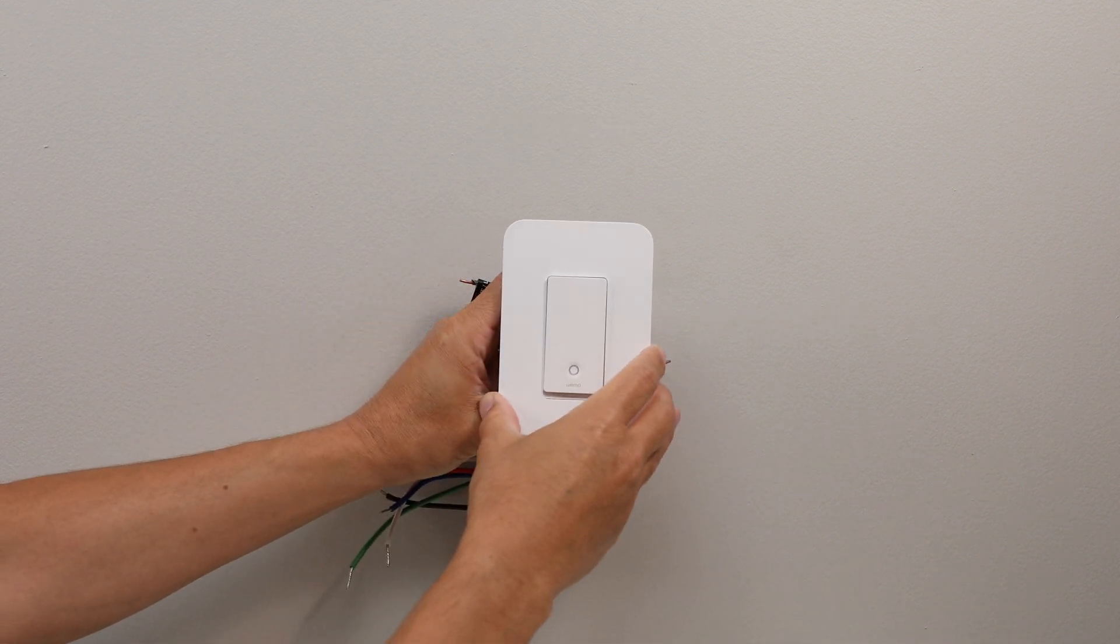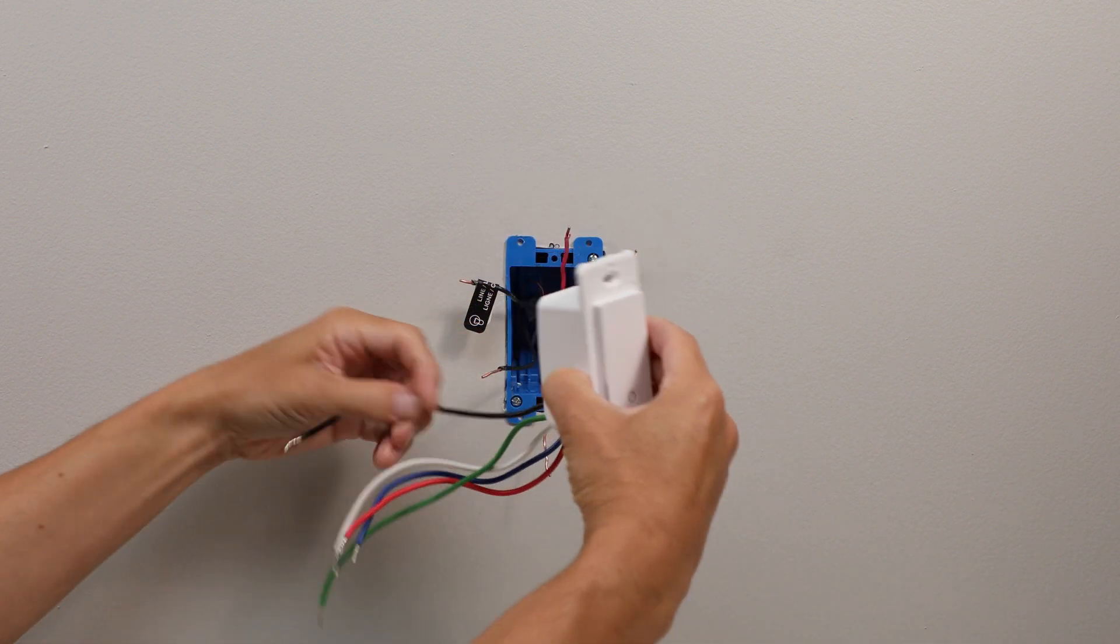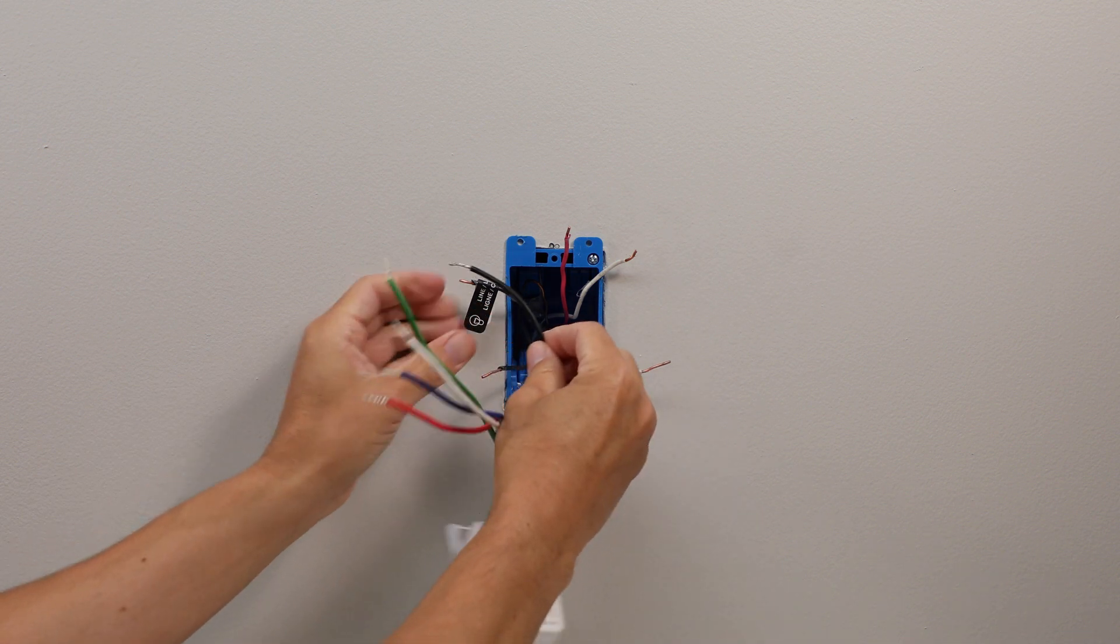Remove the faceplate from your Wemo light switch and use a wire nut to connect the black line load wire from the switch to the labeled line load wire in the wall.